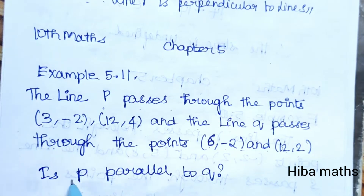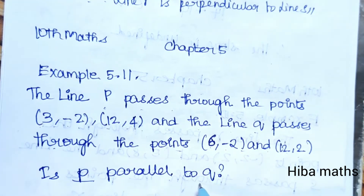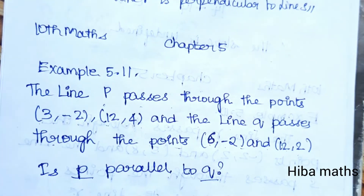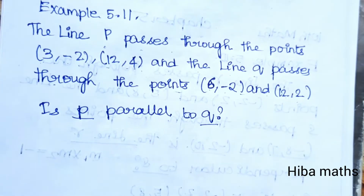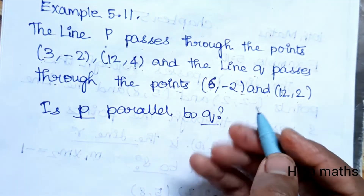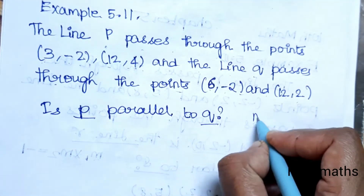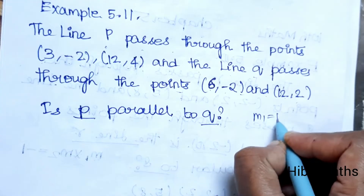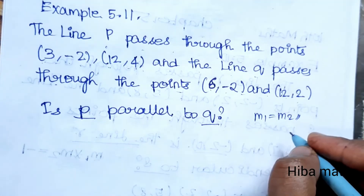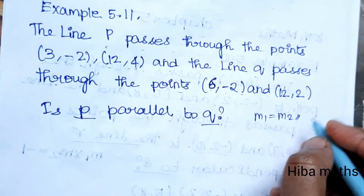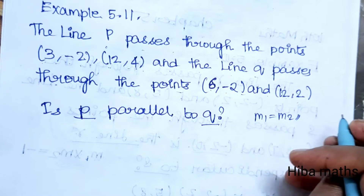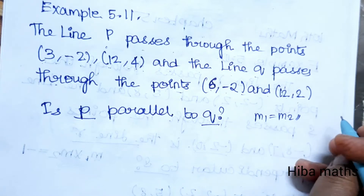Is P parallel to Q? For two lines to be parallel, their slopes must be equal — that is, M1 must equal M2.